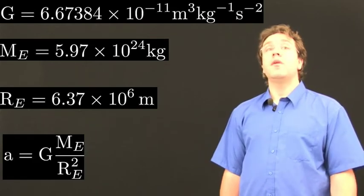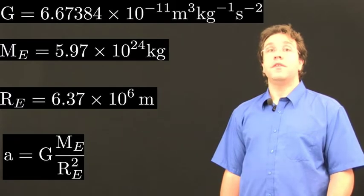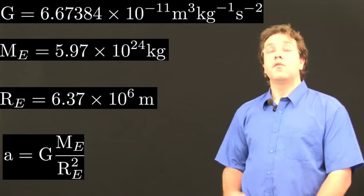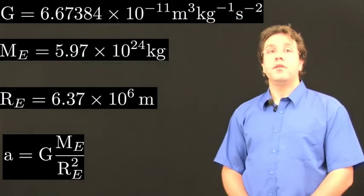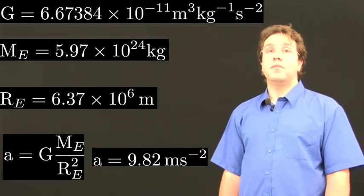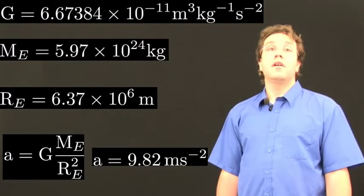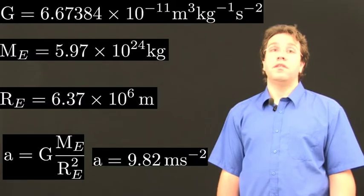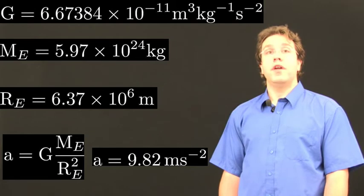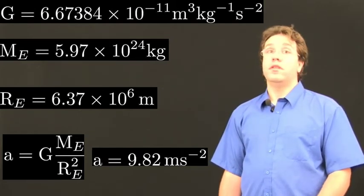Now we know our values for G, M, and R, so we can substitute these into our equation for A and work out the acceleration due to gravity on the surface of the Earth. Putting these numbers in and doing the calculation, you get a value of 9.82 metres per second squared. That's very, very close to the accepted value. Even though we've used numbers rounded to just three significant figures, we've still been able to get an answer that's correct to one part in 100. And that's pretty good going.